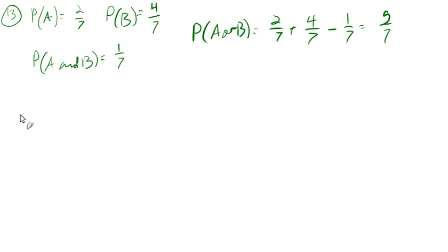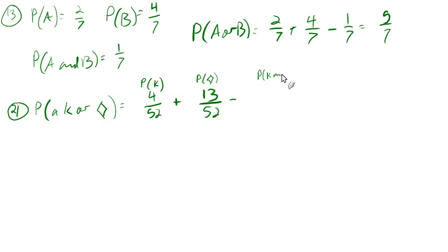On to 21. So we're going to take 1 card out of a deck of cards, just like we talked about in the intro video, and we want to know what's the probability of a king or a diamond. So what's the probability of a king? How many kings are there? There's 4 of them out of the 52 cards, so that's the probability of picking a king. Plus, what's the probability of a diamond? Well, there's 13 diamonds out of the 52 cards.